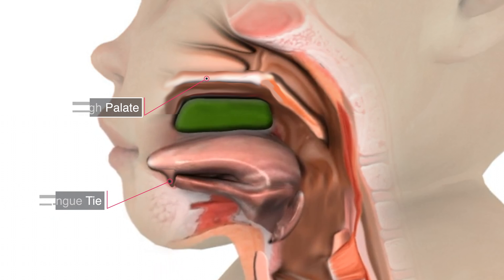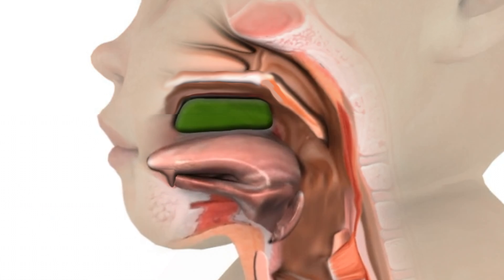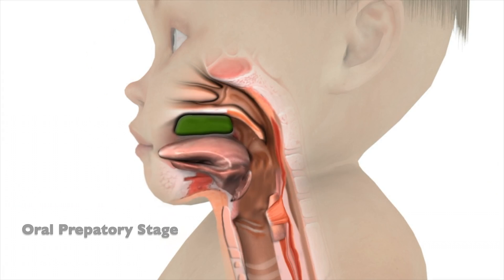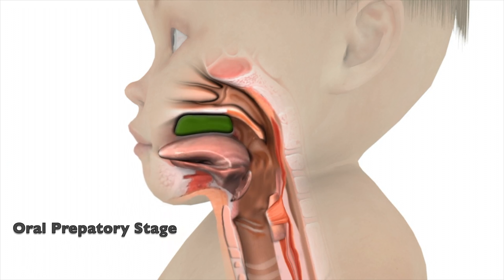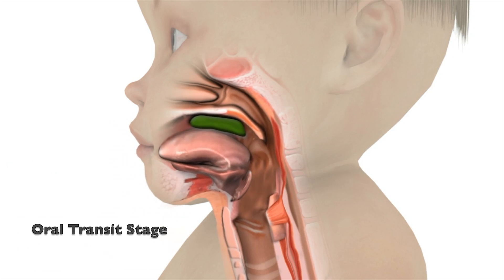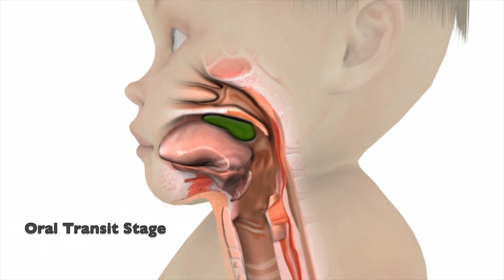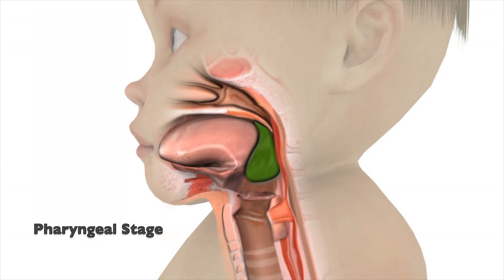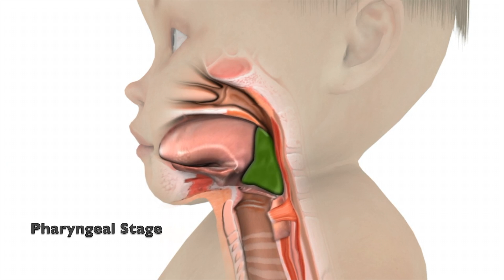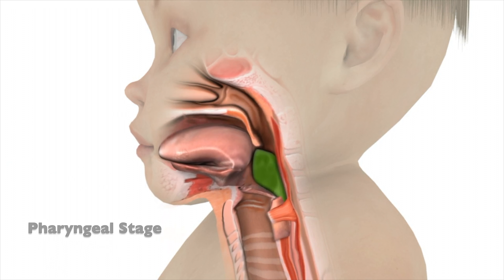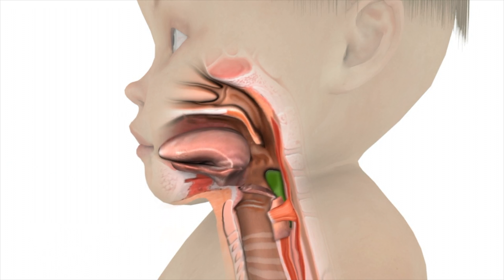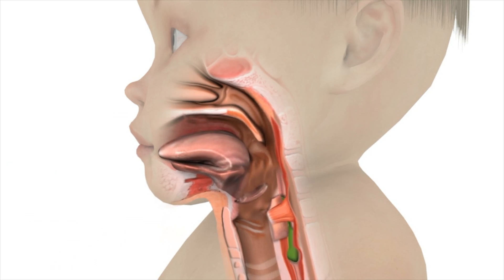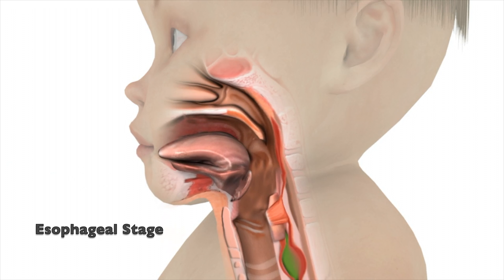A normal swallow requires a smooth progression of four stages: the oral preparatory stage, the oral transit stage, the pharyngeal stage, and the esophageal stage.